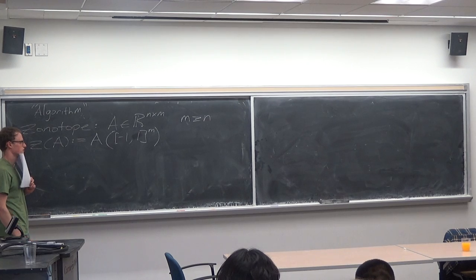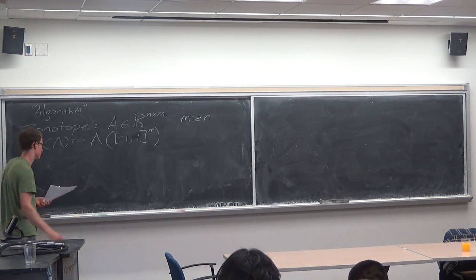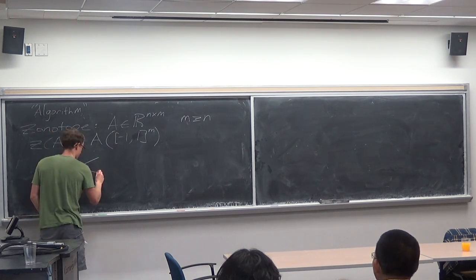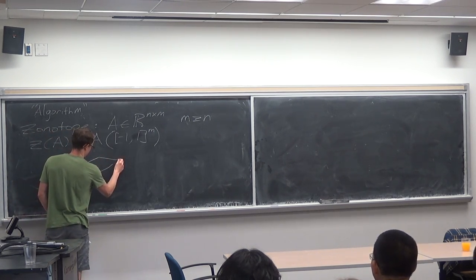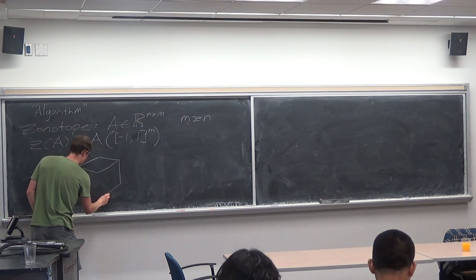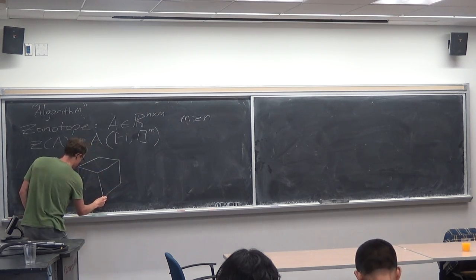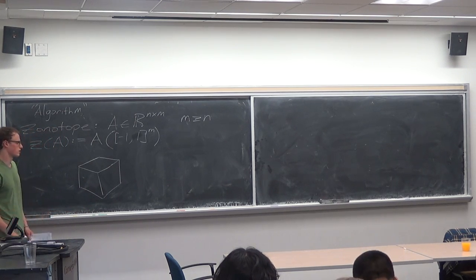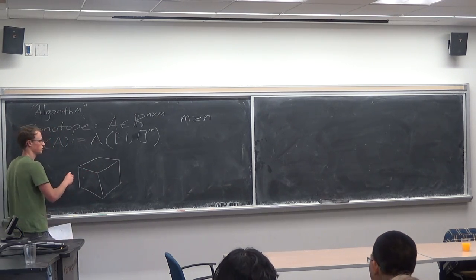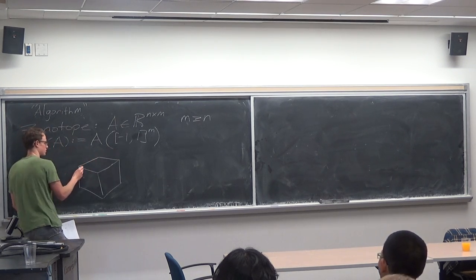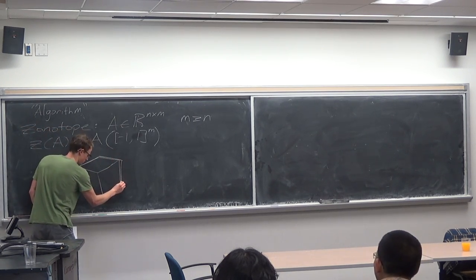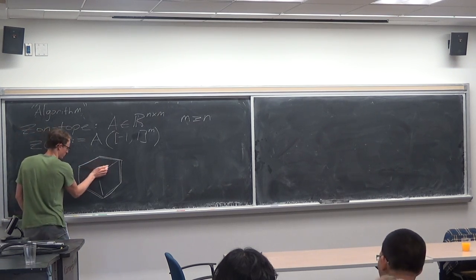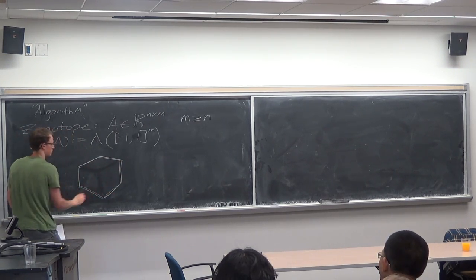For an example of a zonotope, you can try to draw a cube — something like this. The zonotope would be essentially a rotation of a cube, and then if we project it onto the chalkboard, the outline is going to be our zonotope. So that's a zonotope.